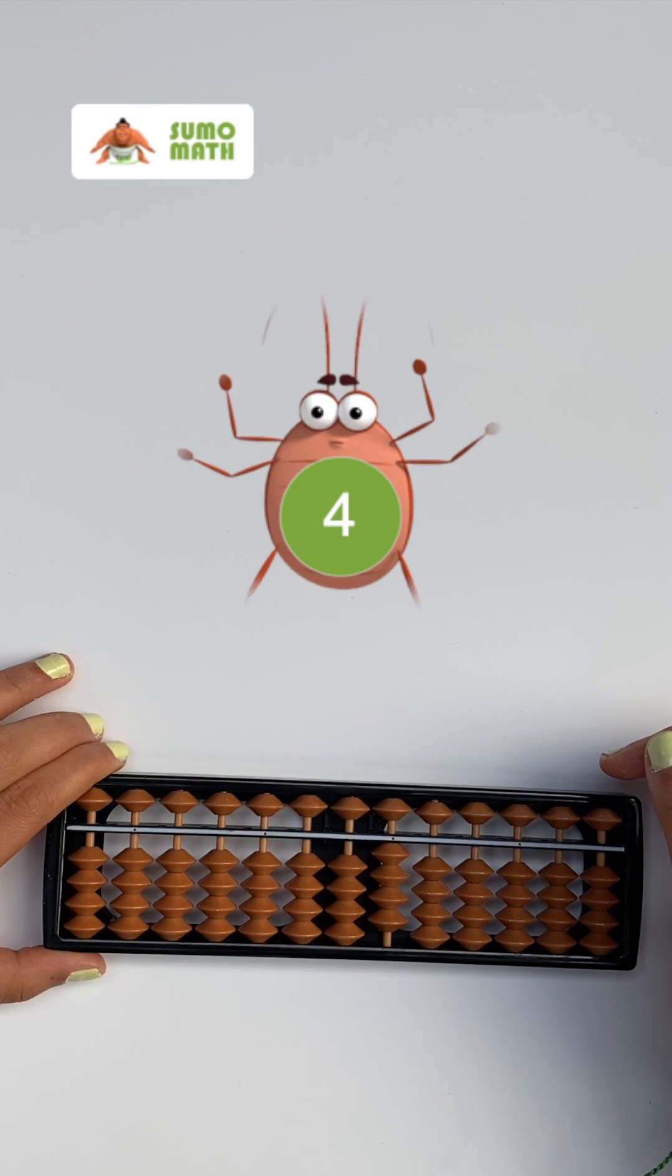Go try it yourself and run a Beetle 4 quiz. Remember to add 6, pinch the 5 bead and 1 lower bead to the bar with your index finger and thumb.